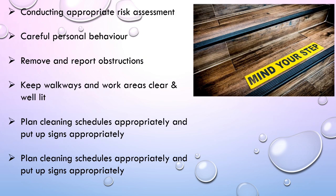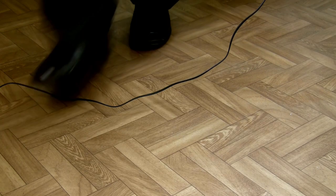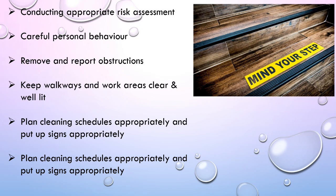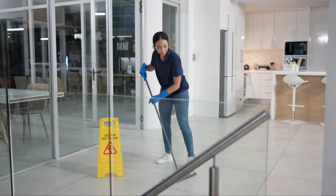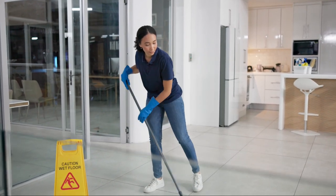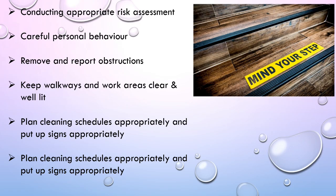Additional prevention measures include: conducting appropriate risk assessments, careful personal behavior, removing and reporting obstructions, keeping walkways and work areas clear, and planning cleaning schedules appropriately. Also put up signs appropriately so people know that there's an obstruction or that the floor is wet.